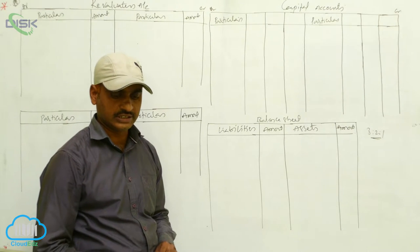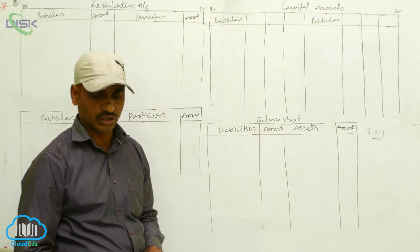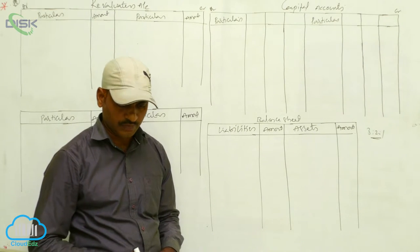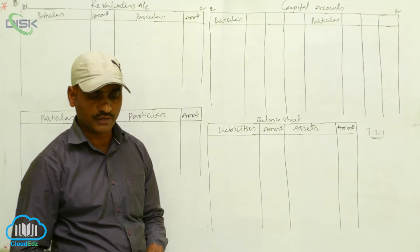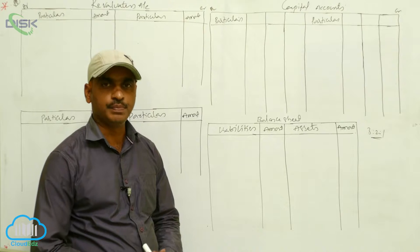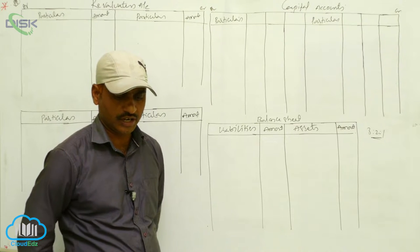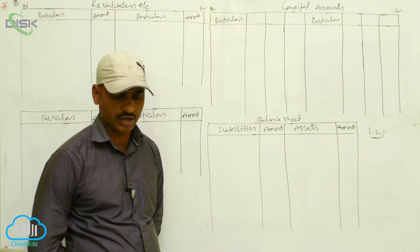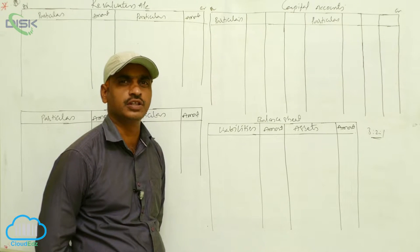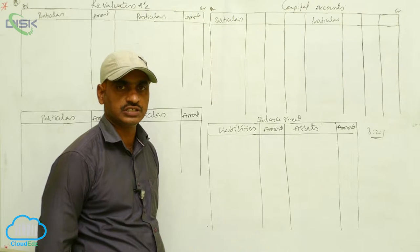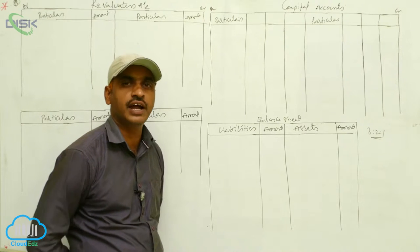The assets side shows: cash in bank 10,800, debtors 12,700, stock 30,000, investments 10,500, and fixed assets 36,000. So these are the liabilities and assets.